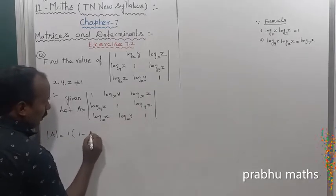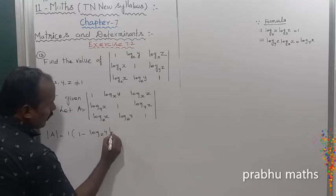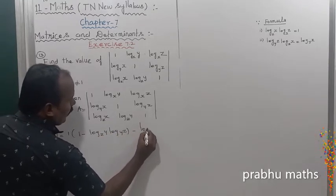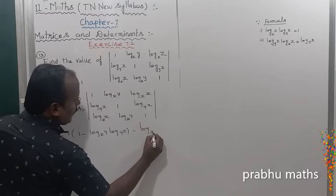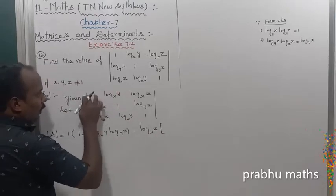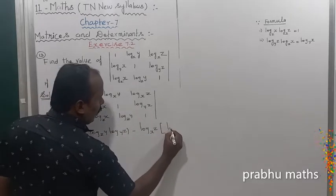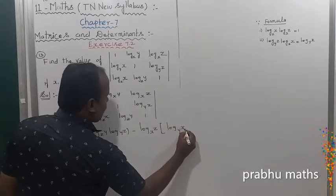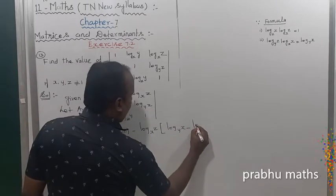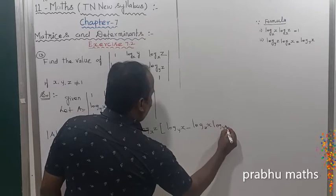1, next minus of this one multiplication of log z y, next one log y z. Next, minus log x z into — for the entire column, entire row should be closed — the first multiplication log z y into x, minus this one multiplication of log z x into log y z.